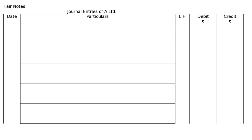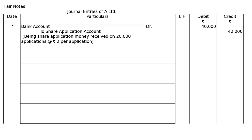Now the journal entries of A Limited. Starting with the first entry after drawing a good journal format: Bank account debited to share application account. 20,000 shares at the rate of Rs. 2 — Rs. 40,000 in debit and credit columns.